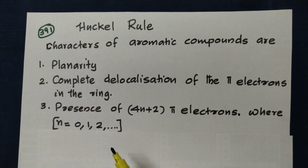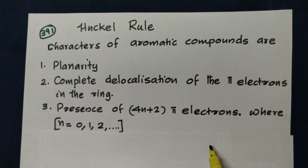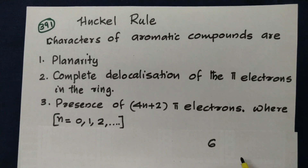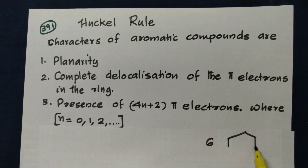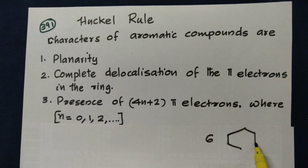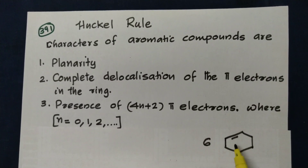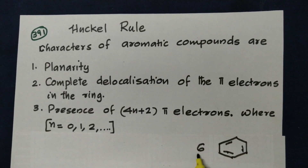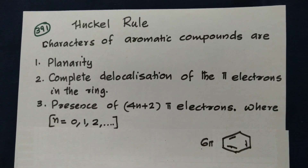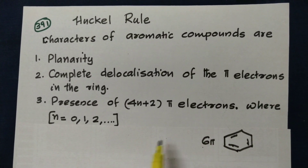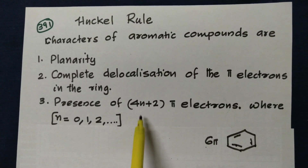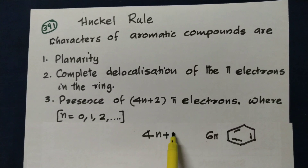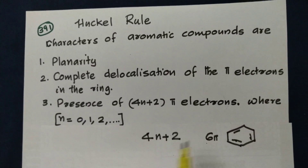For example, benzene is a planar structure with six pi electrons. What is the equation? Four n plus two. When n equals one, that gives six pi electrons.